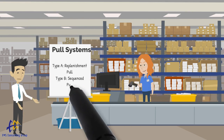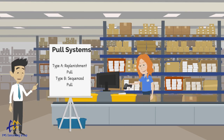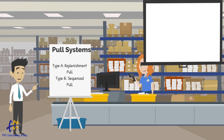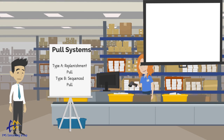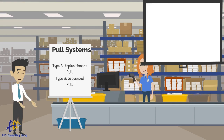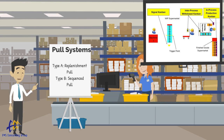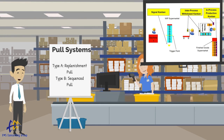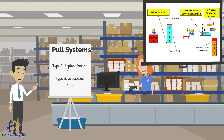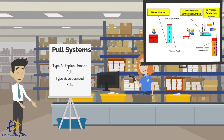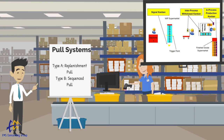There are basically two types of pull systems, aptly named Type A and Type B. A Type A pull system is often called Replenishment Pull. Two processes — a supplier and a customer — are connected by a supermarket, or visual storage of inventory by part number or product. The customer process pulls material from the supermarket as needed, and the supplier process builds to replenish the supermarket based on a visual signal known as Kanban.